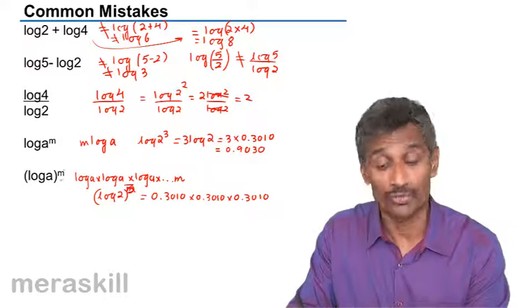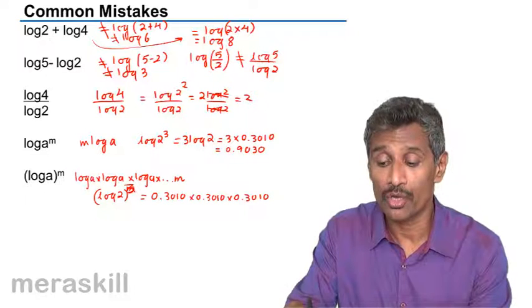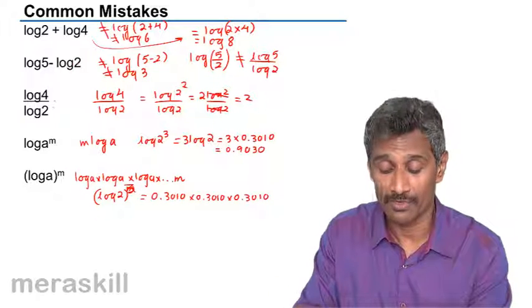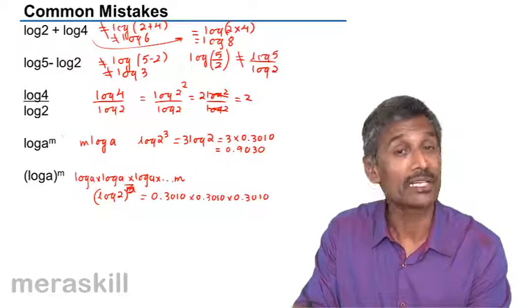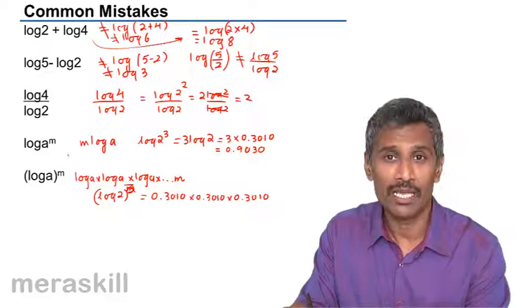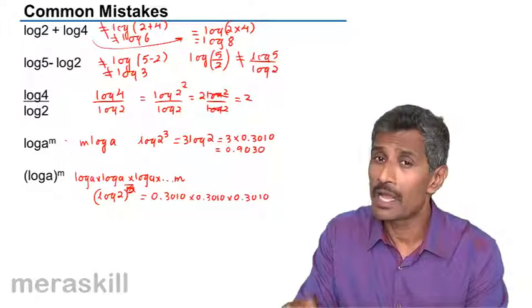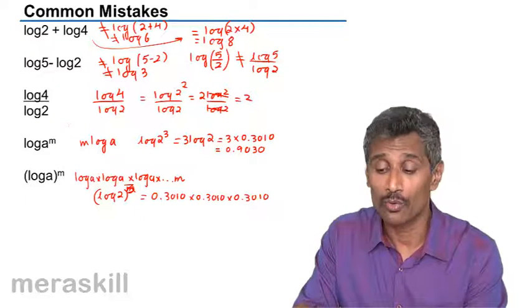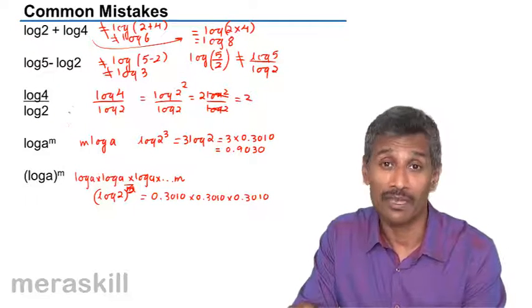So we need to watch out for these troubleshooting issues: log 2 + log 4, log 5 − log 2 — these are the kinds of things we need to take care of, and being careful about them will definitely give you a very good advantage.